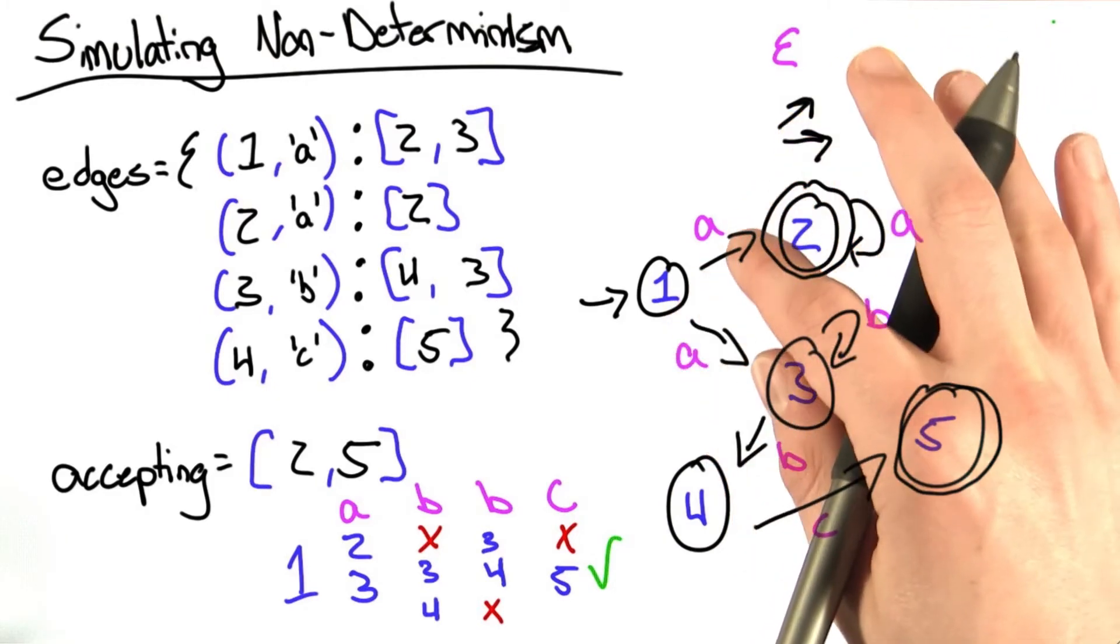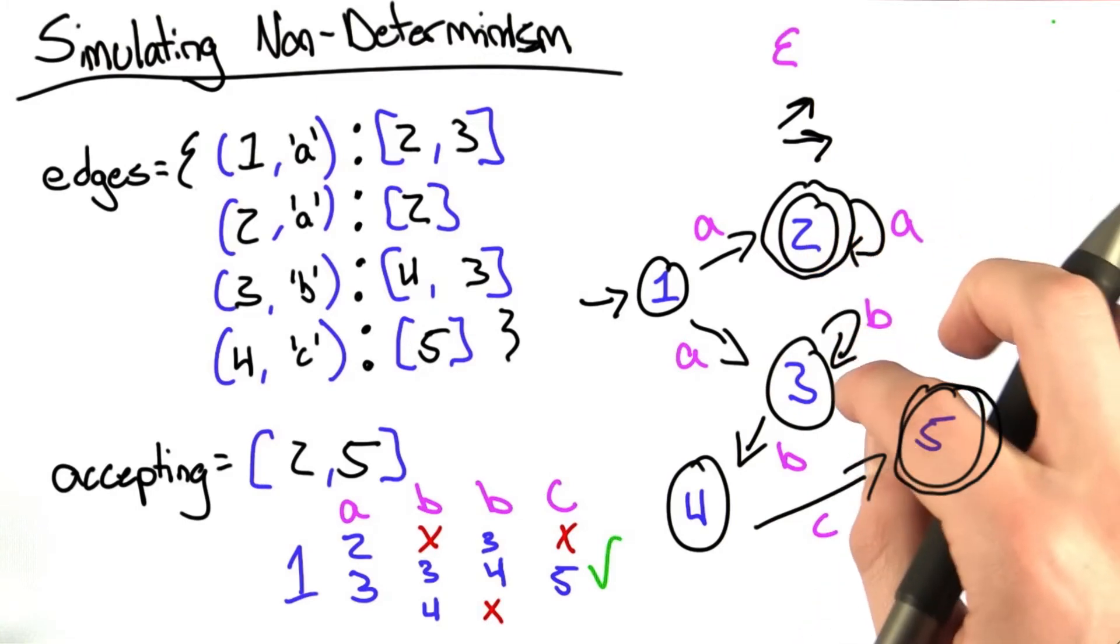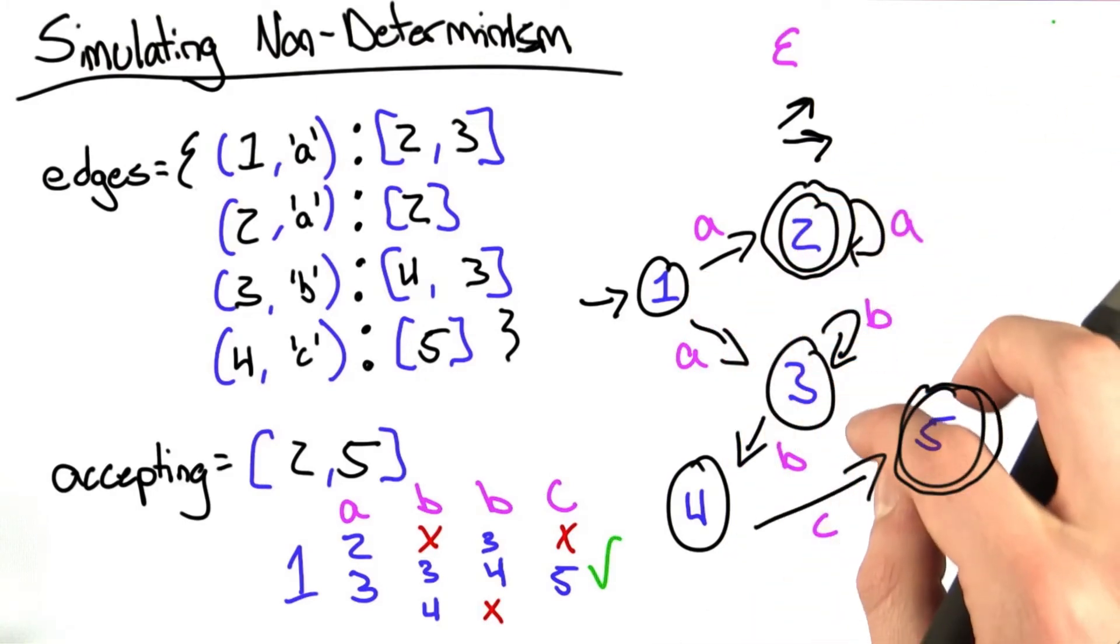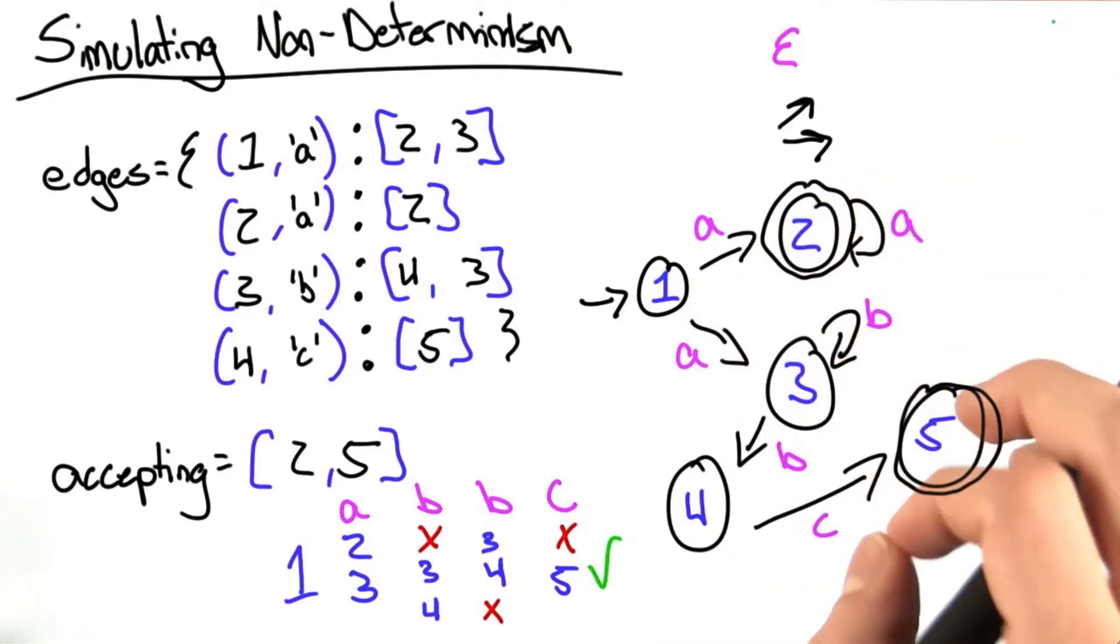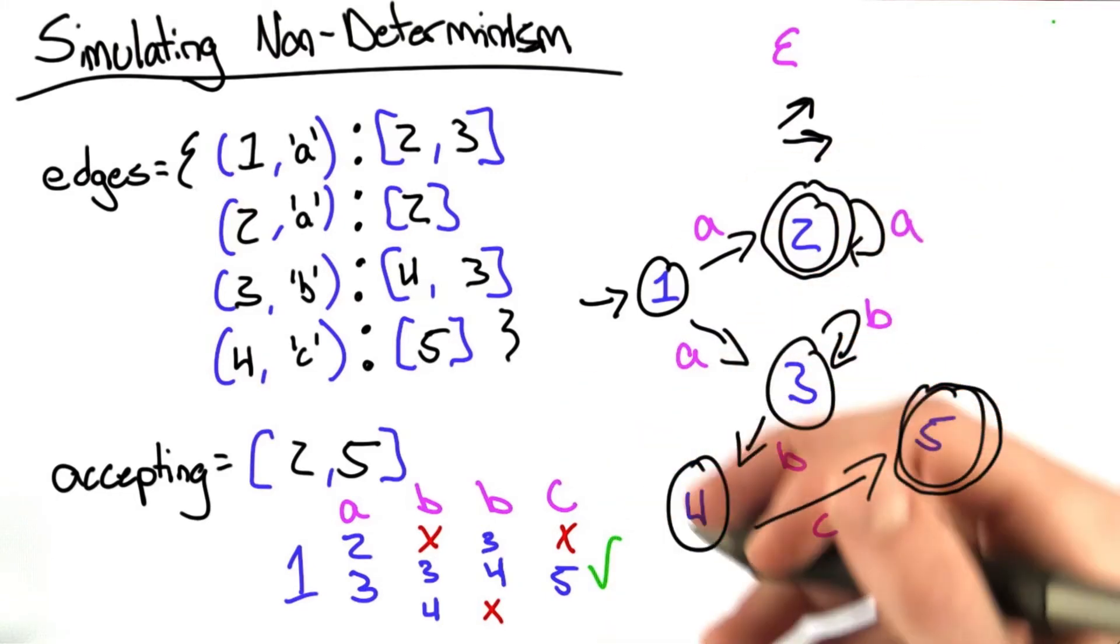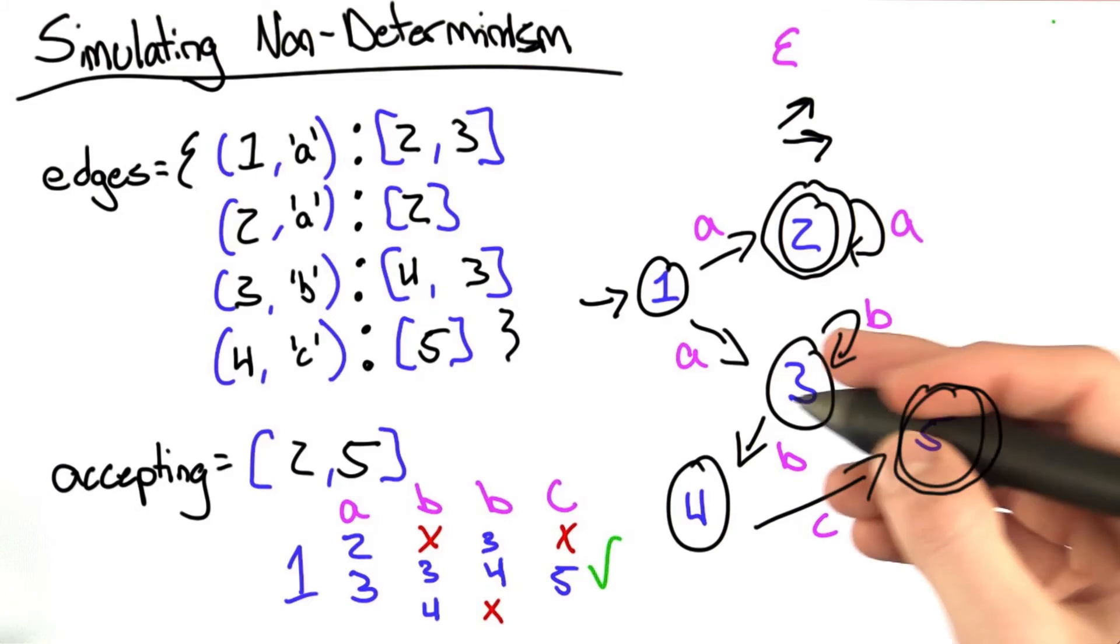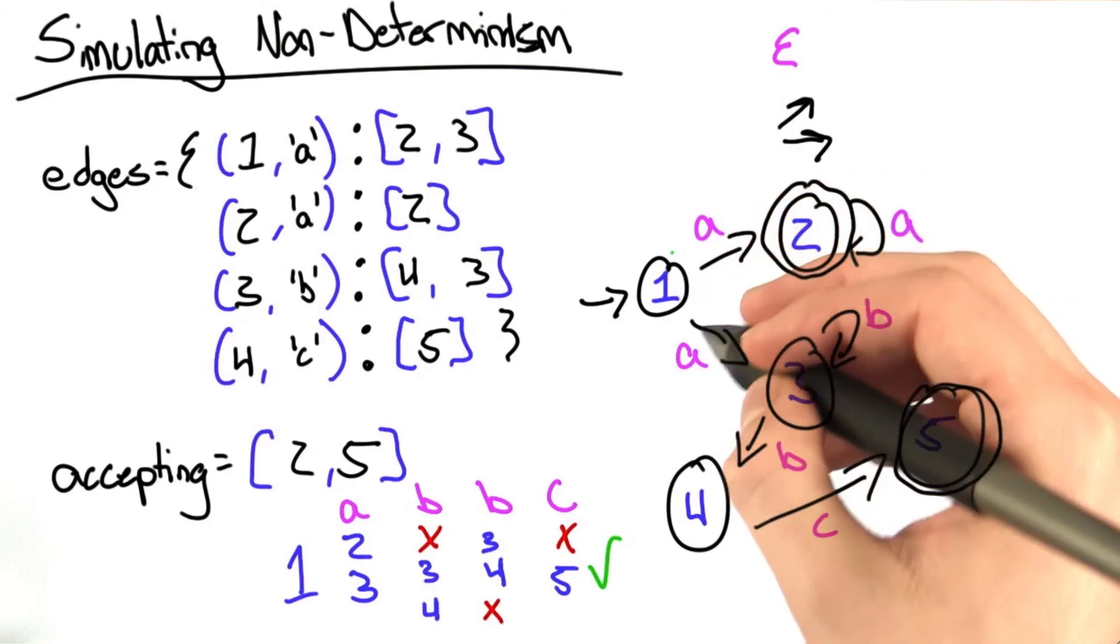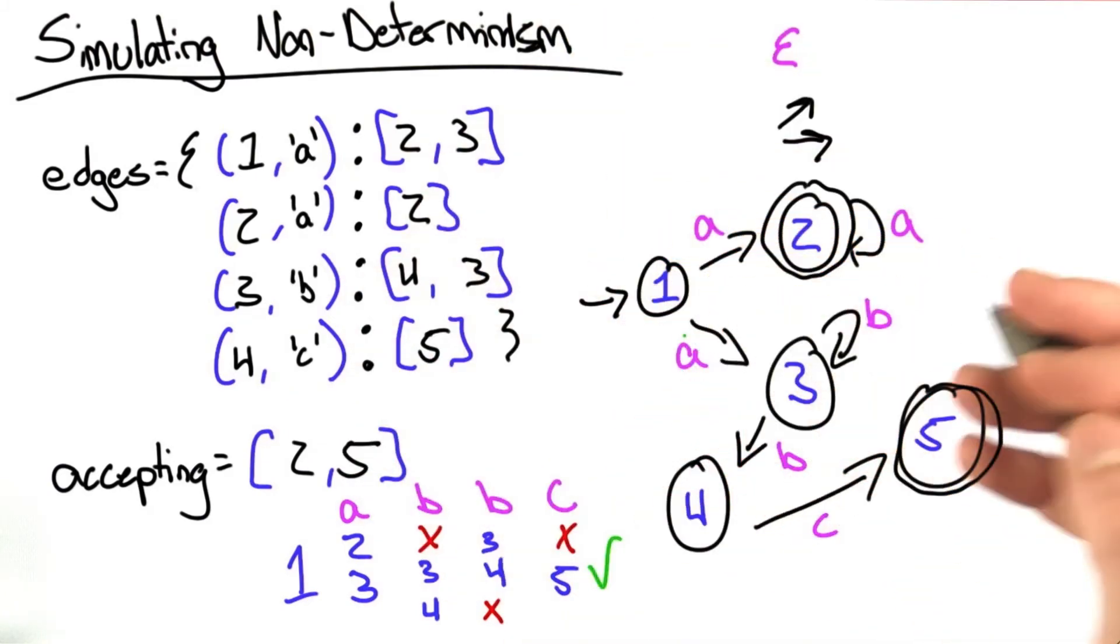So at 1, we're going to take the A and recurse onto 2 with the rest of the string, and onto 3 with the rest of the string. And if any of those recursions, those recursive calls, comes back true, then we say, beginning at state 1, we return true. And it's going to go all the way back up. Let's try writing that.